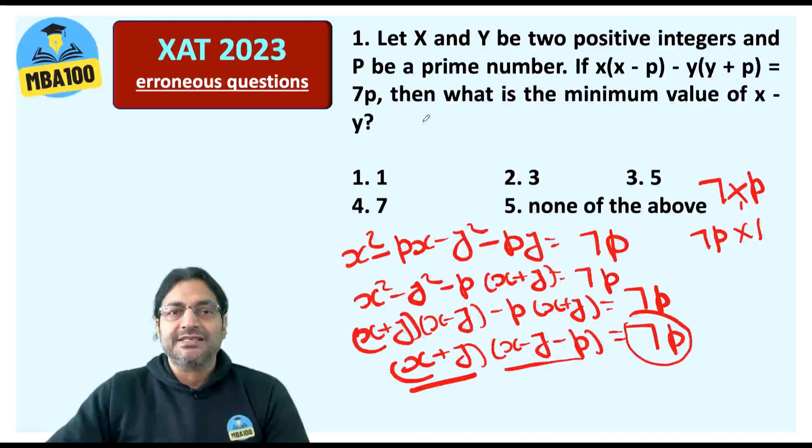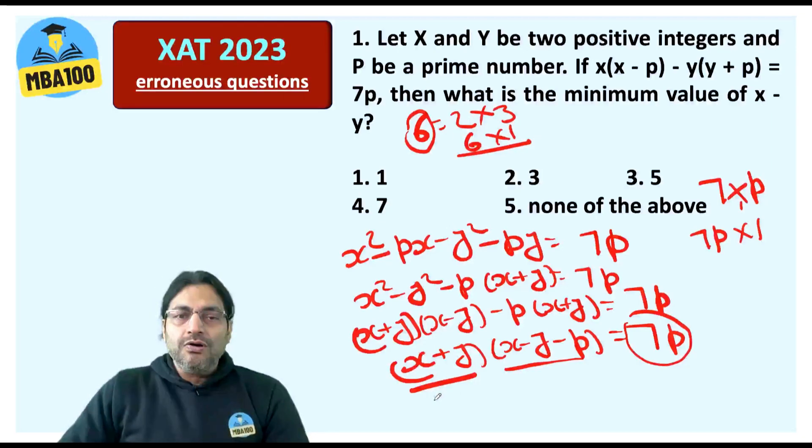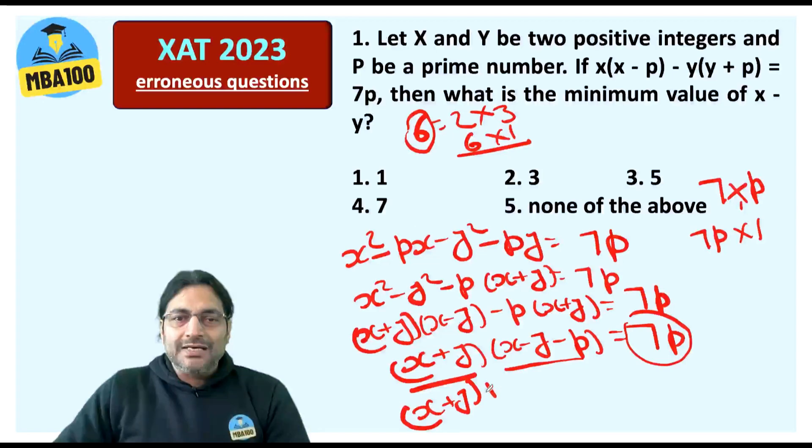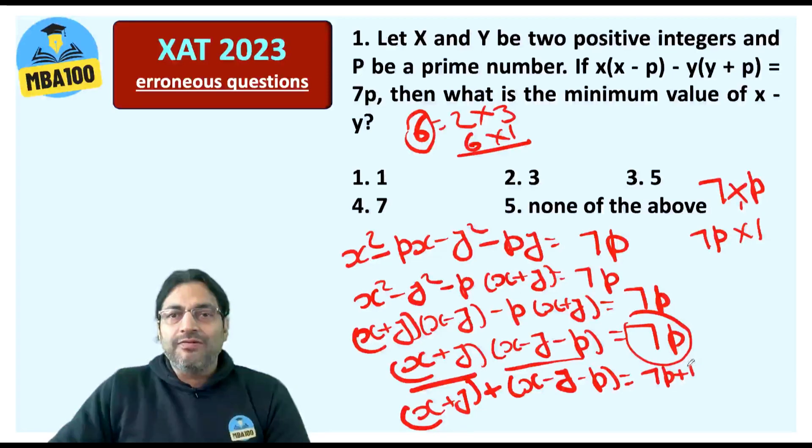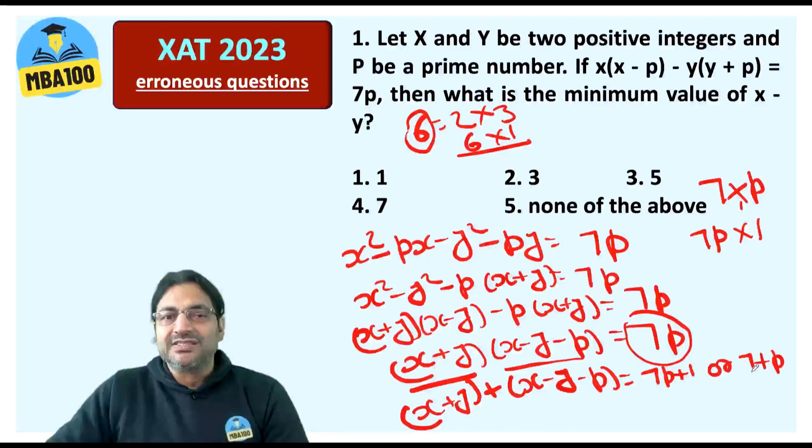I will give you another example. Let us say there is a number 6. 6 is made of two prime numbers, 2 and 3. So 6 can be expressed as a product of two positive integers in just two ways: 2 into 3 and 6 into 1. There is no third way. So we can say that (X + Y) + (X - Y - P) is equal to 7P + 1 or 7 + P.